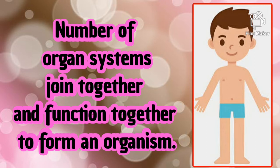A number of organ systems join together and function together to form an organism. Here you can see the example of a human being. There are many organ systems in an organism. All these organ systems work together efficiently in collaboration with each other to make up one single organism.